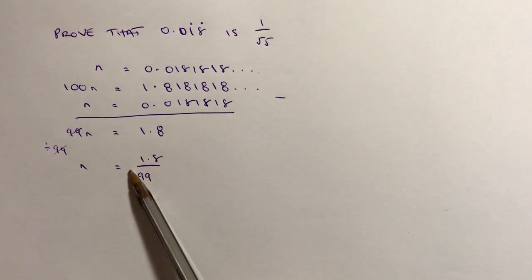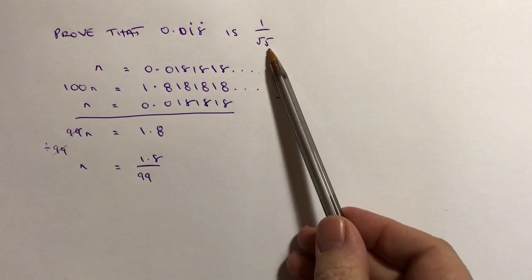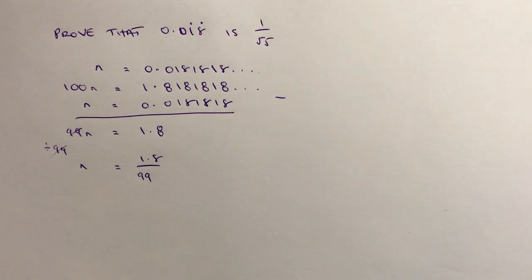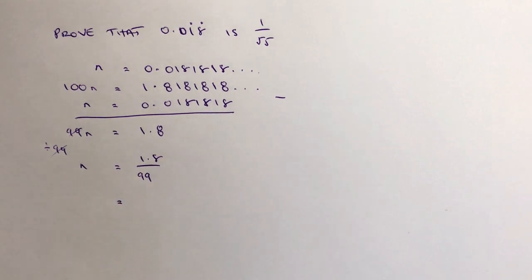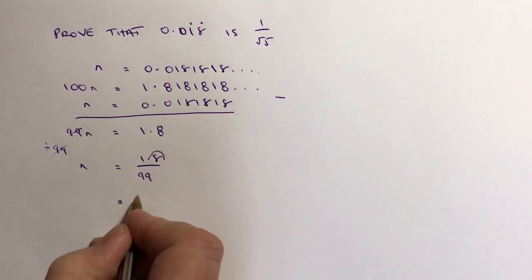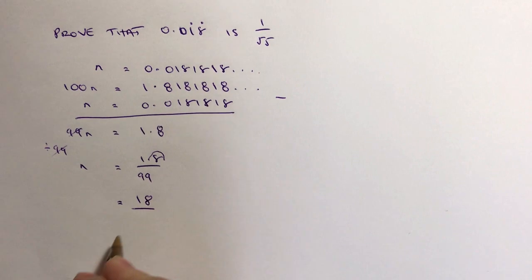Now the difficulty, as I mentioned before with this question, is that we've got to convert this fraction into something that looks like that. I'm fairly happy with the method and what we've achieved so far. The problem is just taking this fraction and changing it to that. If I look at this fraction, the first thing I'm going to do is get rid of this decimal point by multiplying through by 10. If I multiply the top by 10, I get 18; if I multiply the bottom by 10, I get 990.